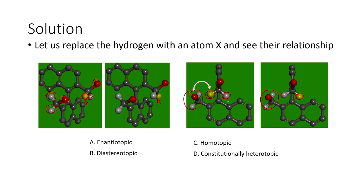If you look at the benzene rings, we have two benzene rings attached — basically one naphthalene unit here and another naphthalene unit here. These are approximately perpendicular to each other. There is axial chirality present in this particular molecule. That is the reason the relationship between these two hydrogen atoms is diastereotopic in nature.